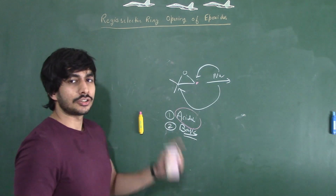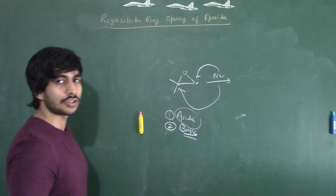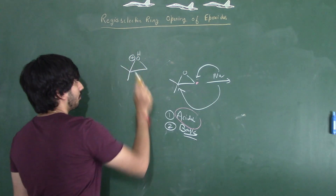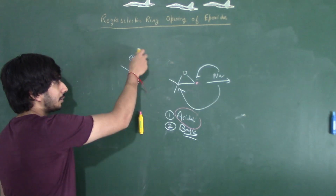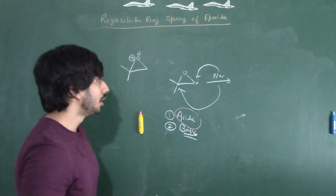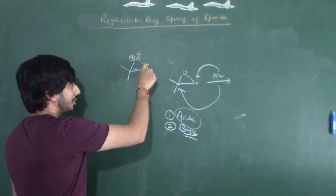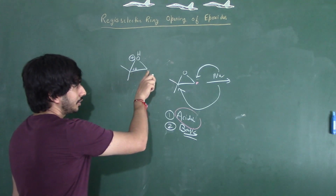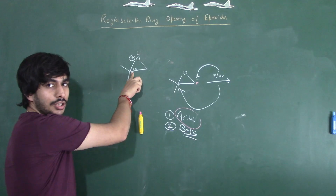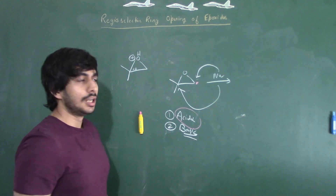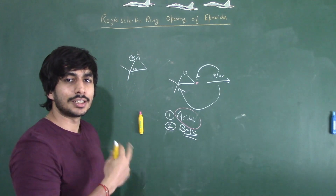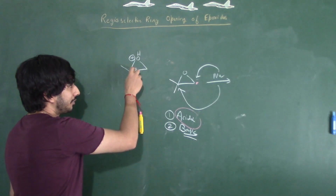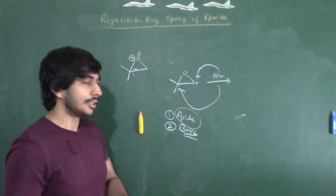But in acidic conditions, there comes the problem. In acidic conditions, what will happen is first this epoxide will get protonated — this oxygen will get protonated and a positive charge will be generated on this oxygen. Now because there is a positive charge generated on this oxygen, there will be a transition state generated where the positive charge will be generated on this carbon.